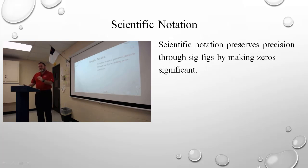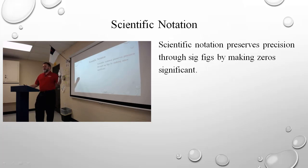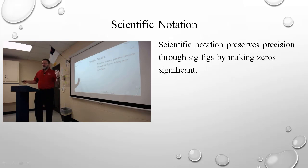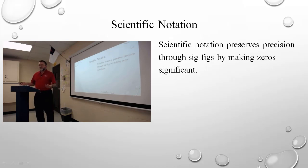Zeros before the decimal that are trailing with no significant figure at the end are not significant. Well, that's a lot of insignificant zeros. We need to help these zeros out. How do we make them significant if they should be? Because if we have a device that's precise enough to measure to the thousandths place, and our number is exactly that number, we've just wasted a bunch of money on precision. We do that with scientific notation.